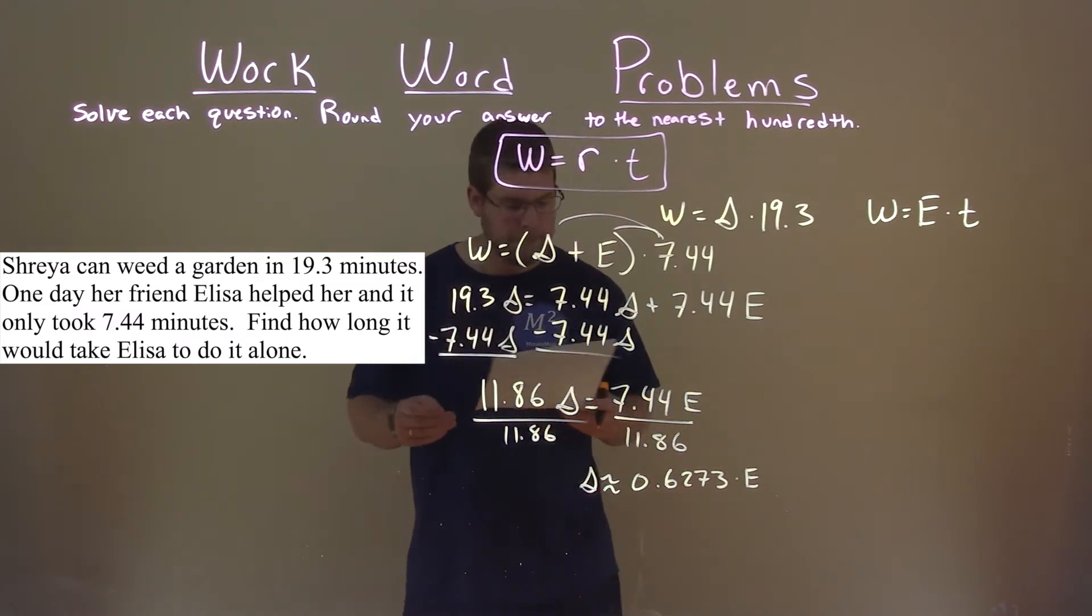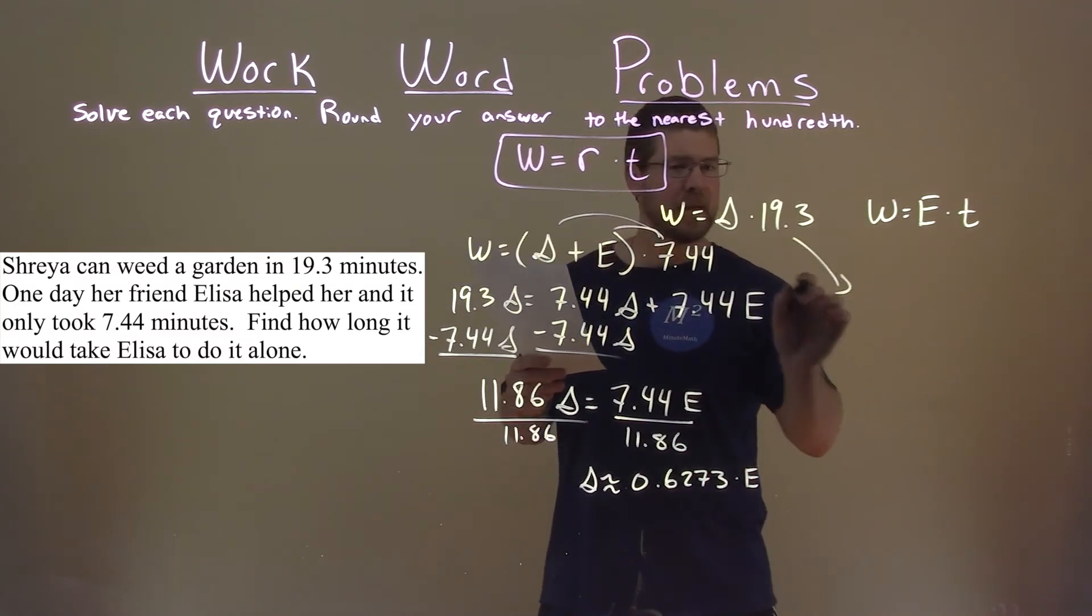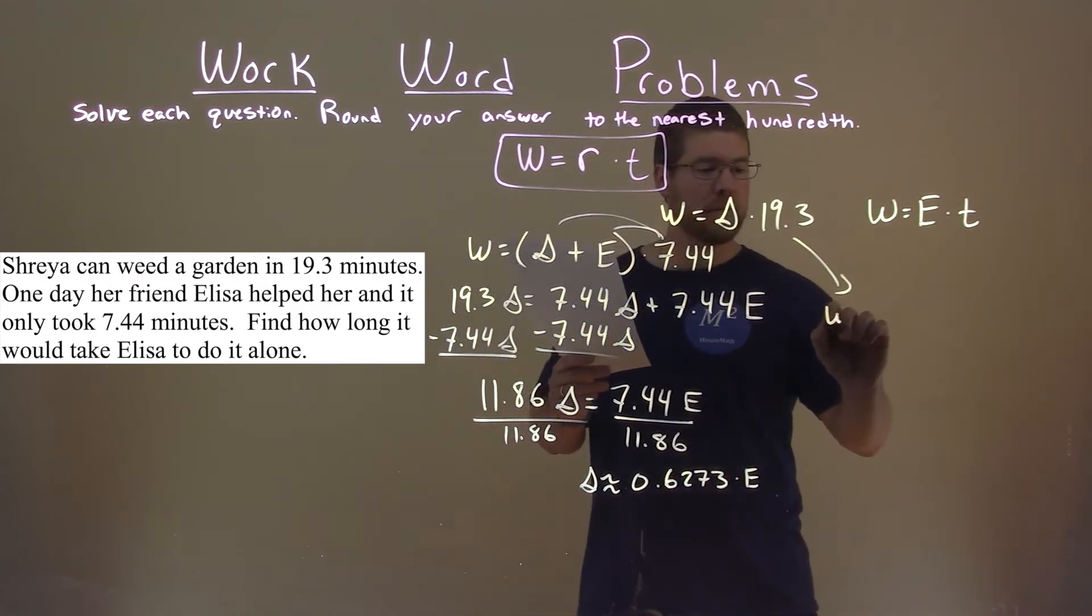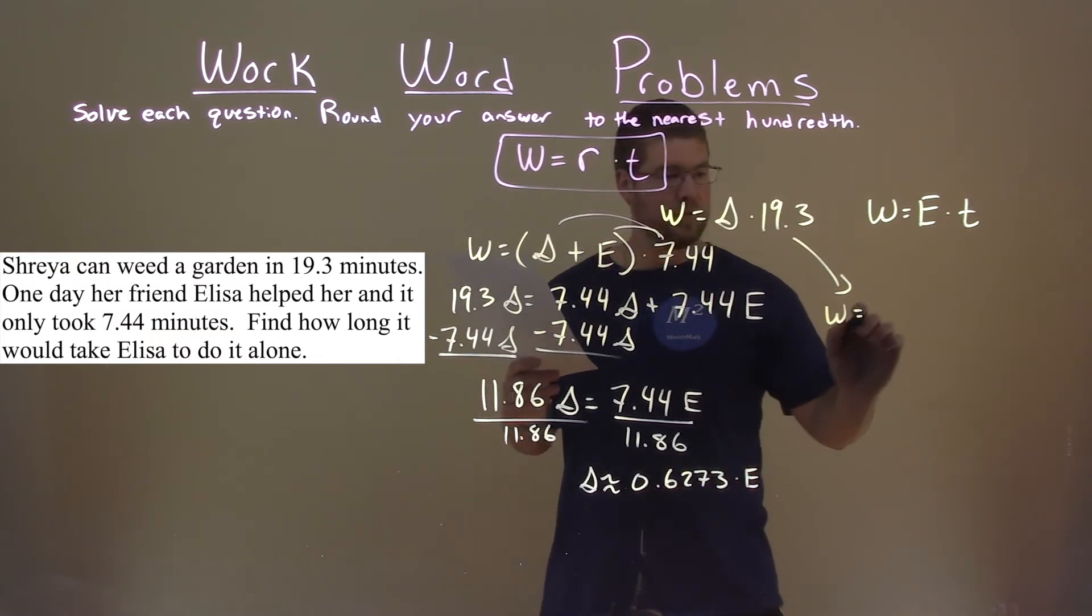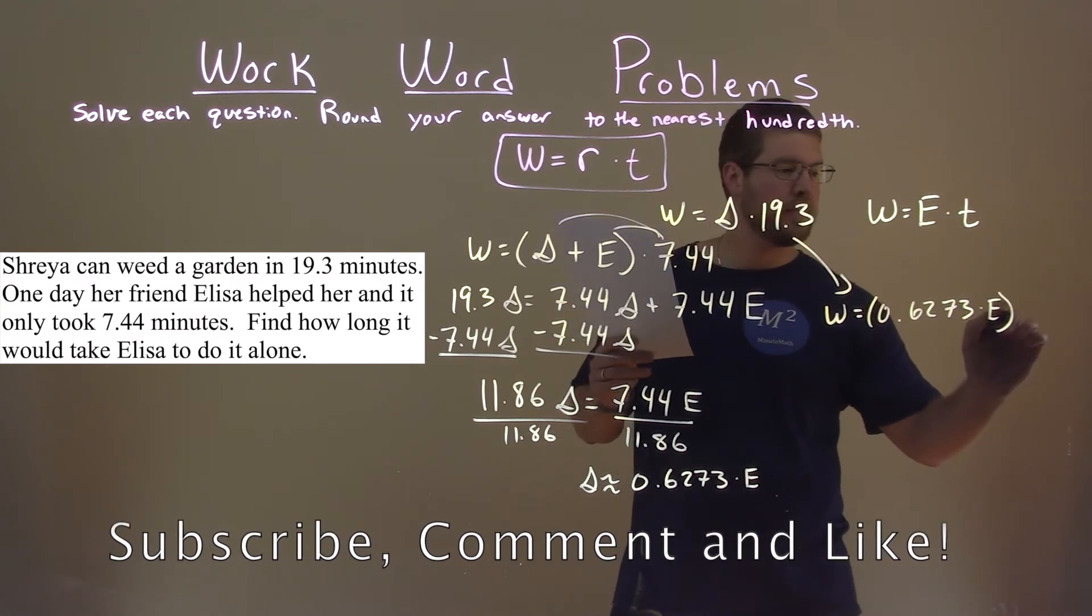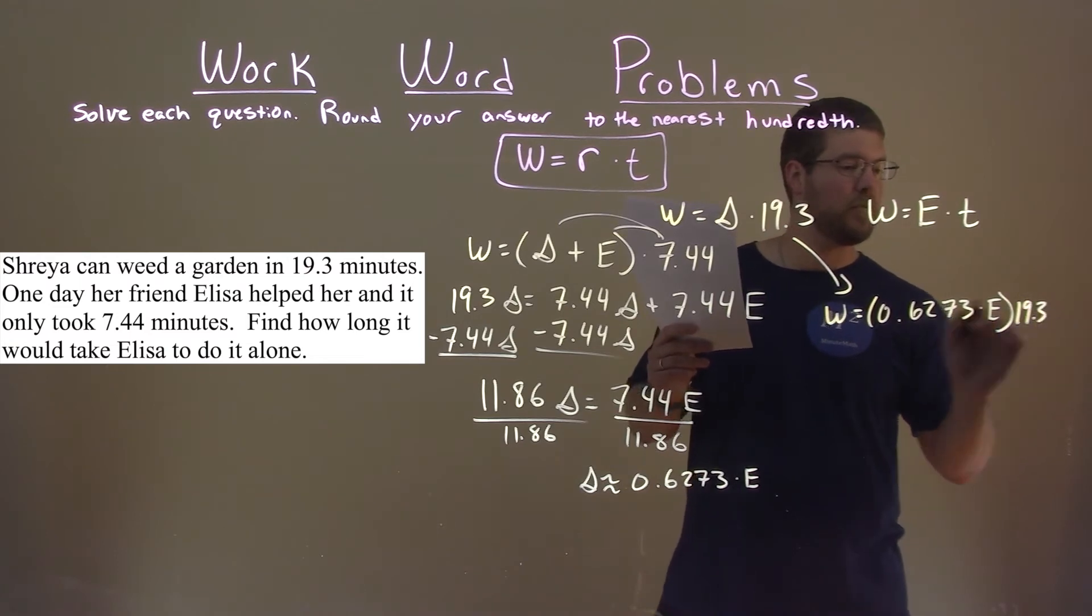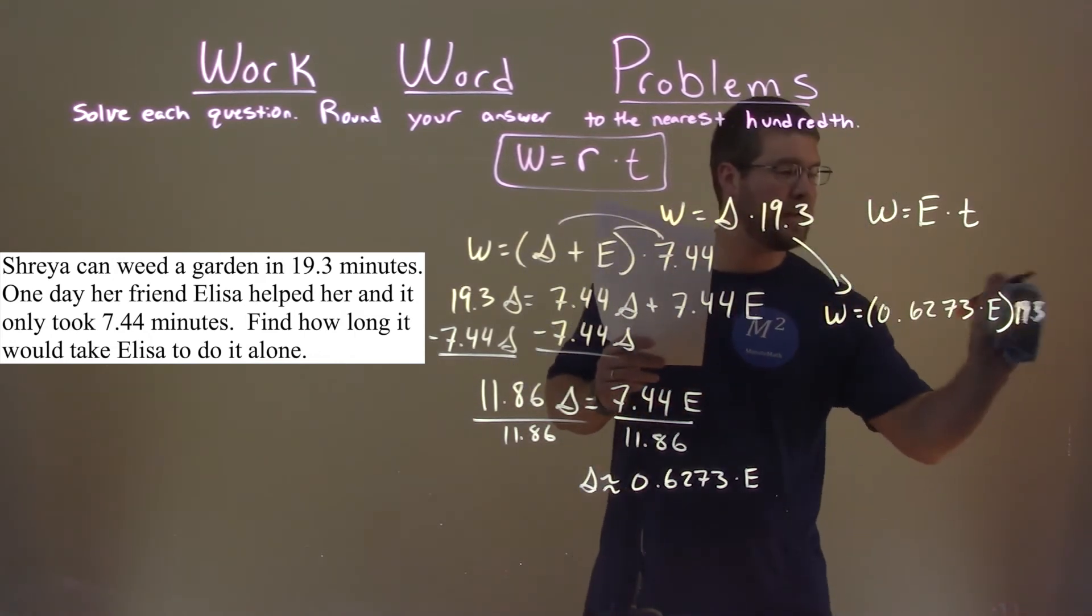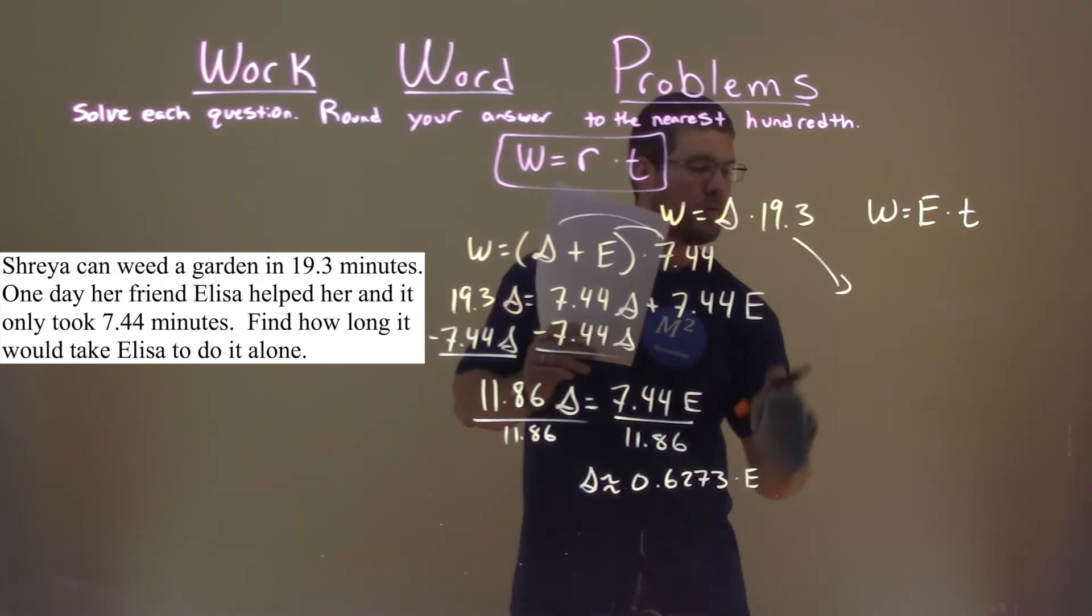Okay. Well, now what we can do is we're going to take the formula here from Shreya, and we're going to plug in what we know here. So, that work is equal to Shreya's rate, which is 0.6273 times E times the time of 19.3. Let me erase that just in case it didn't fit. I'm going to rewrite that, because I don't know if it's going to be off-screen. I would hate for it to be. So, sorry if it was.